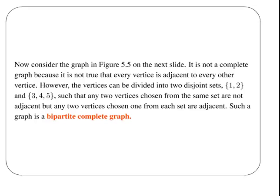It is not a complete graph because, although every vertex is adjacent to others, the vertices are divided into two disjoint groups — 1 and 2 in set A, and 3, 4, and 5 in set B — such that any two vertices chosen from the same set are not adjacent, but any two vertices chosen one from each set are adjacent. We would call that a Bipartite Complete Graph.